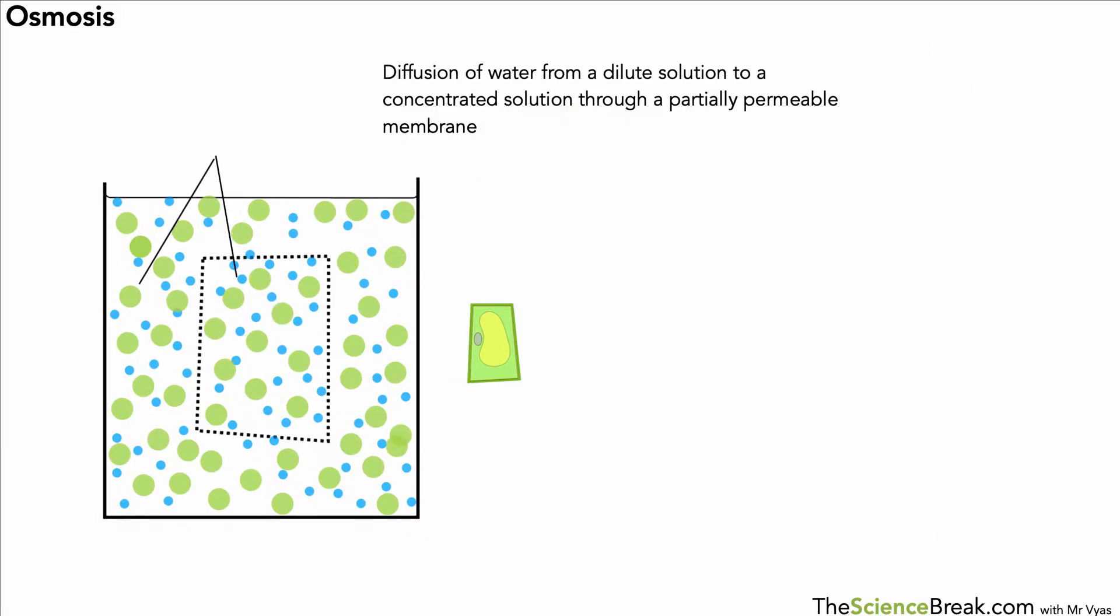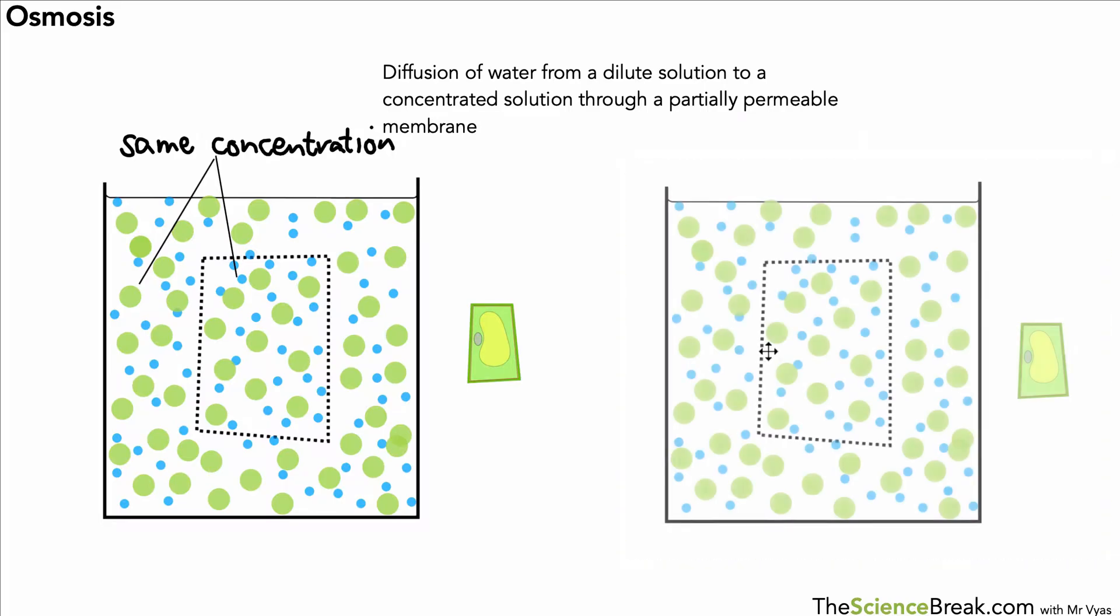Now what happens if we have the same concentration inside compared to the outside? If the two concentrations are the same, as you could imagine, there would be no overall change in the cell. The cell will look the same, and in fact we say there is no net movement of water through osmosis because the two concentrations are the same.